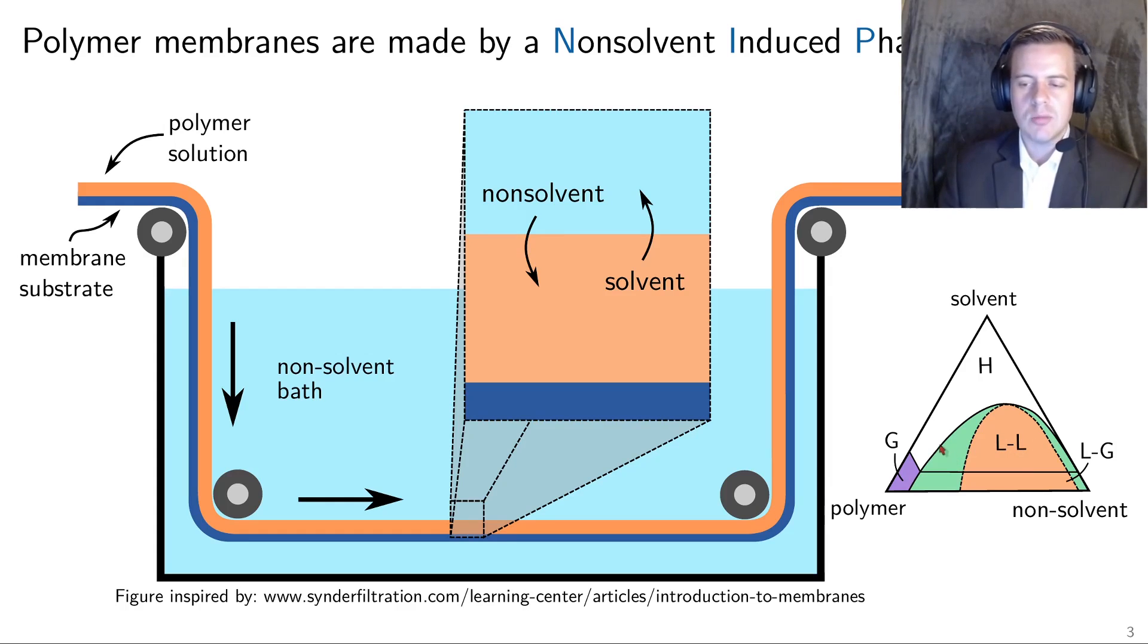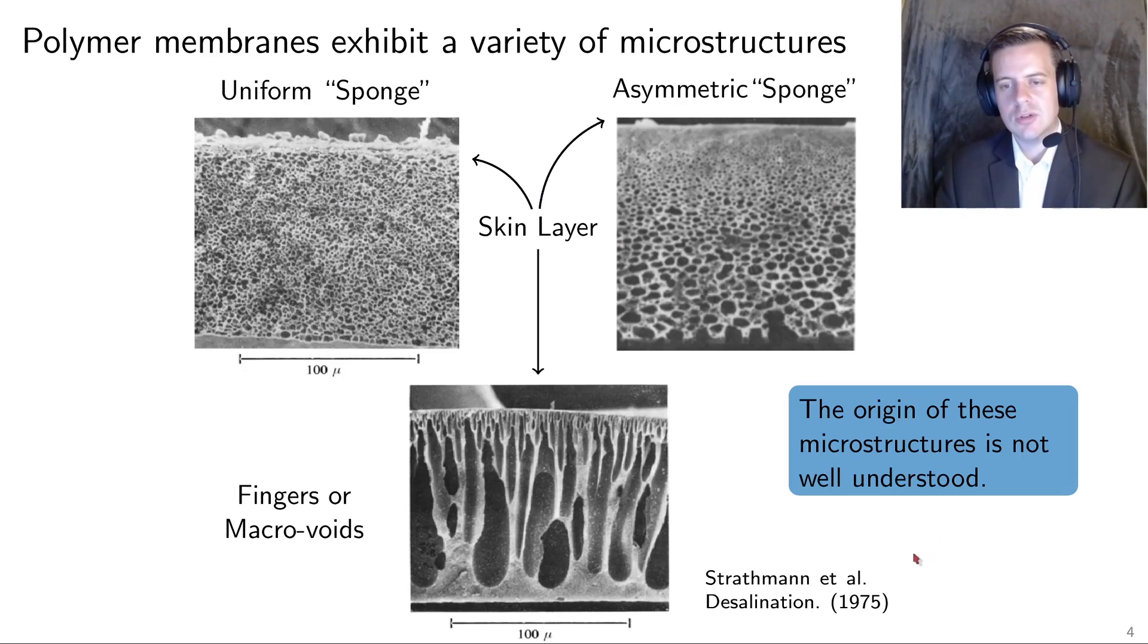You can think about this ternary phase diagram where you have a polymer and non-solvent that have some miscibility gap, but a polymer and a solvent that are miscible, and a solvent and non-solvent that have some window of miscibility. If you start with your film out here in this homogeneous region, over time you would expect that it would quench into the liquid-liquid region and phase separate, and then you would get the polymer branch solidify, and the solvent branch would blow away, and you'd get your microstructure left over.